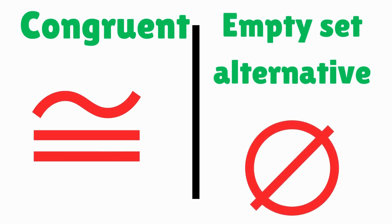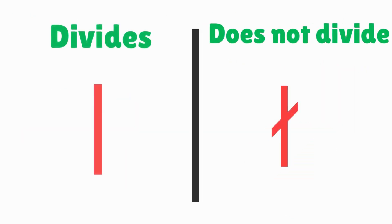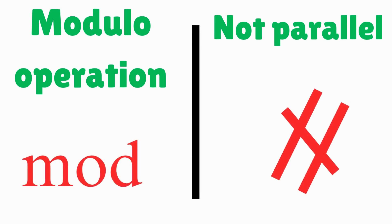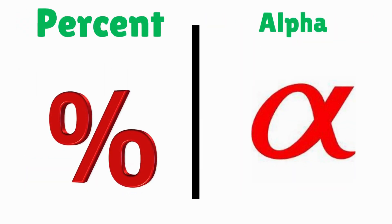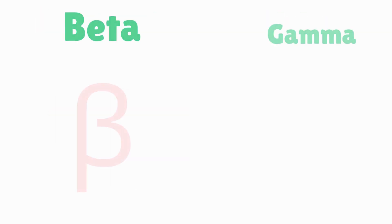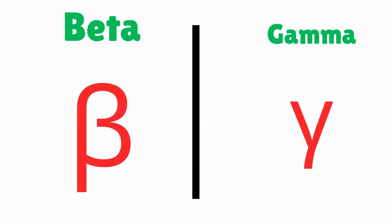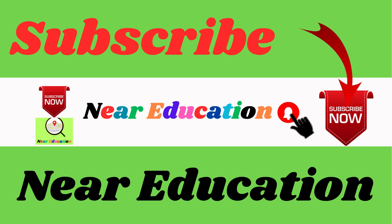Congruent, empty set alternative, divides, does not divide, model O operation, not parallel, percent, alpha, beta, gamma. Don't forget to subscribe.